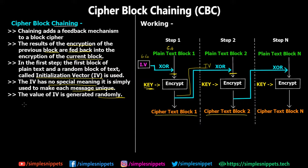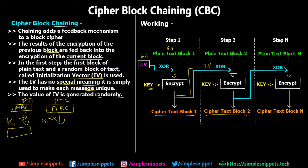To understand why this matters, consider Electronic Code Book: if two blocks both contain the same plain text 'ABC' and the same key K1 is applied with no feedback, both blocks produce the same ciphertext output, say 'XYZ'. This repetition makes ECB weaker compared to other algorithm modes, because hackers can spot patterns and use brute-force attacks — trying different key combinations — to break the code.